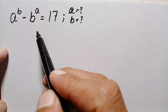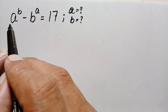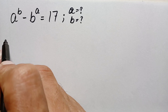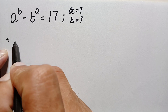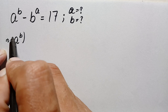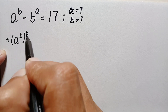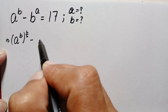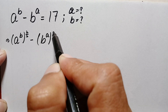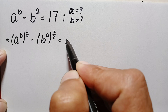Let's start our solution. First of all, we can rewrite the terms: a raised to power b can be written as a raised to power b over 2, all squared — that is (a^(b/2))² — minus b raised to power a written as (b^(a/2))², and this is equal to 17.